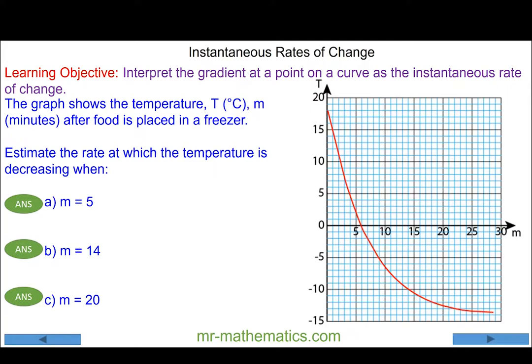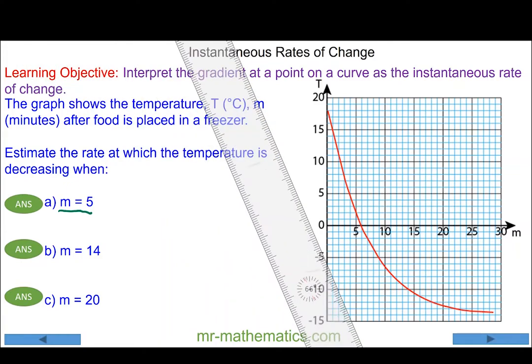In this lesson we're going to calculate and interpret the gradient at a point on a curve as the instantaneous rate of change. A piece of food has been placed into a freezer and we're going to find the rate of change of temperature of that food after five minutes.